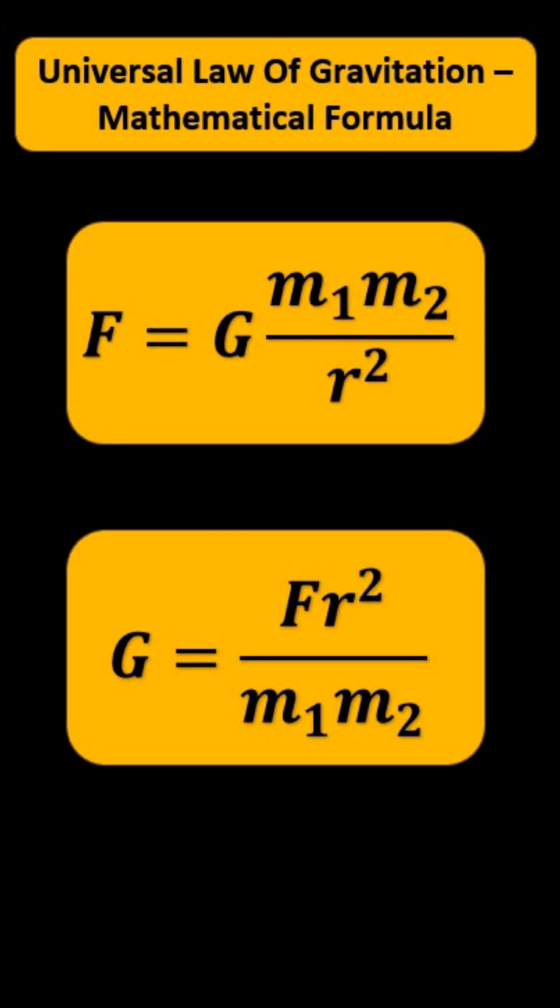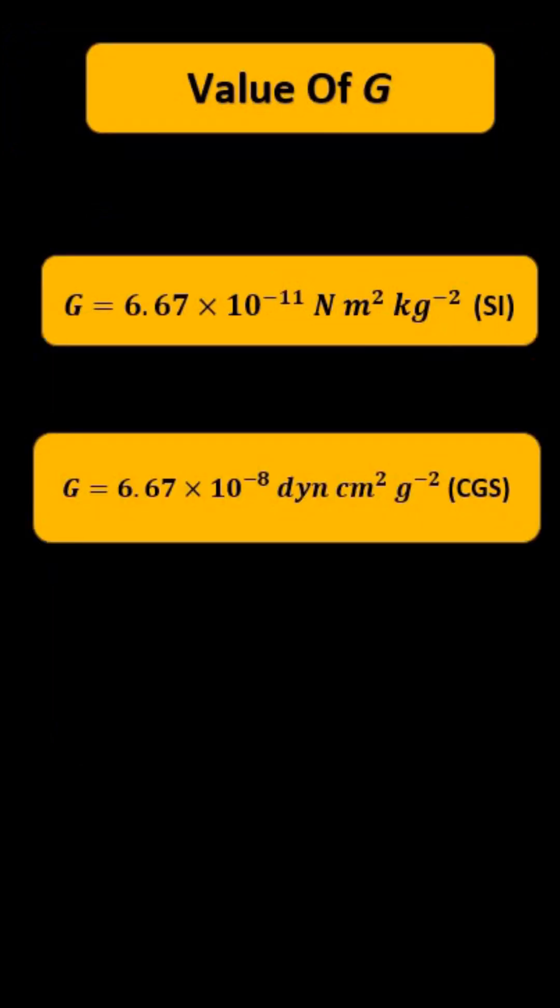Here the capital G is the universal gravitational constant. It is a proportionality constant and it has a value equal to 6.67 × 10^-11 Newton meter square kg^-2 in SI.